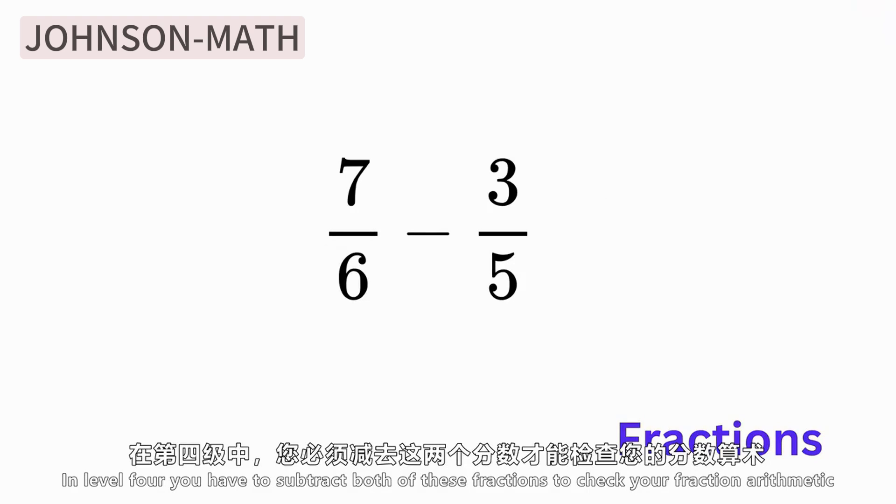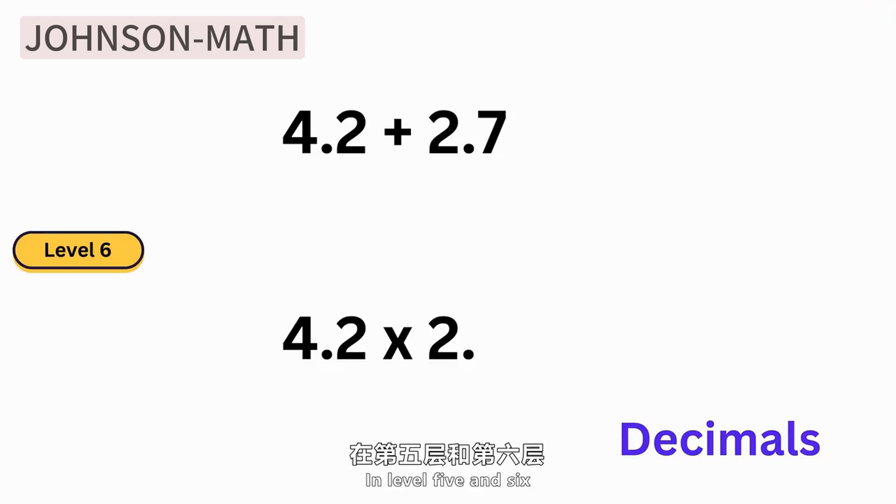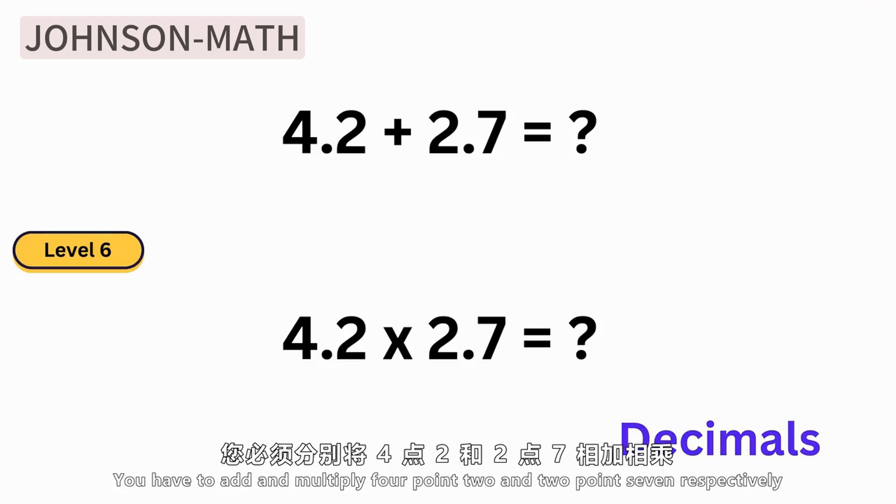Next is decimals. In Levels 5 and 6, you need to calculate 4.2 plus 2.7 and 4.2 times 2.7 respectively.